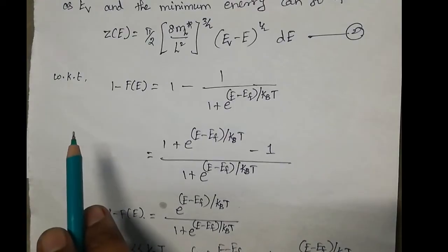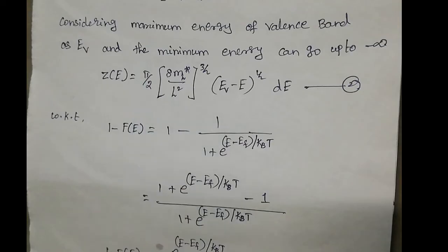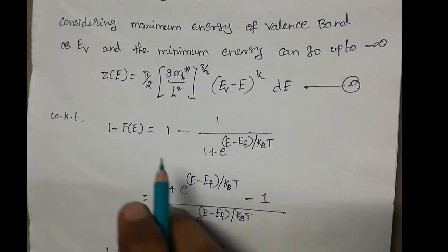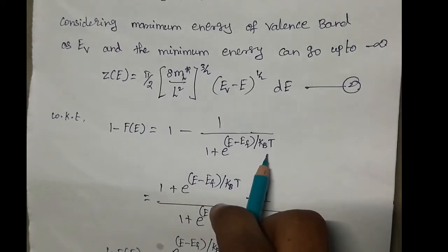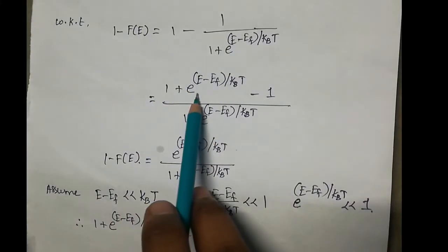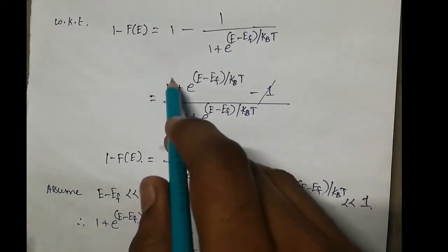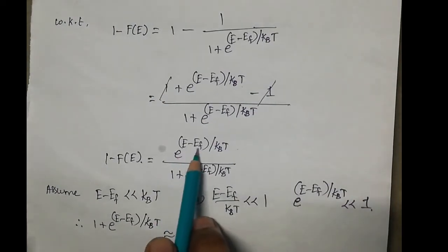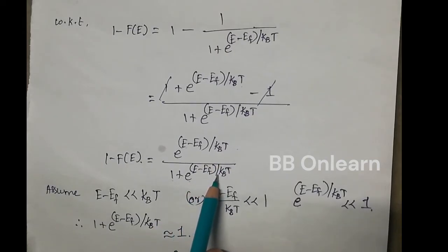We know that the carrier concentration of holes uses 1 − F(e). So 1 − F(e) = 1 − 1/(1 + e^((e−ef)/kBT)). Taking the LCM and simplifying: the numerator becomes e^((e−ef)/kBT) and the denominator is 1 + e^((e−ef)/kBT). This gives equation 3.